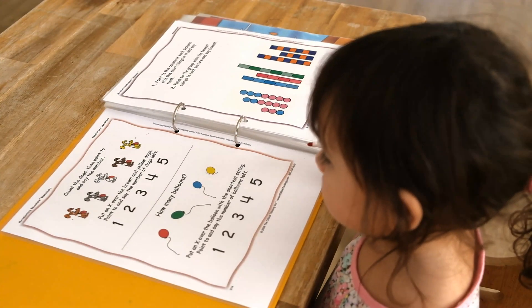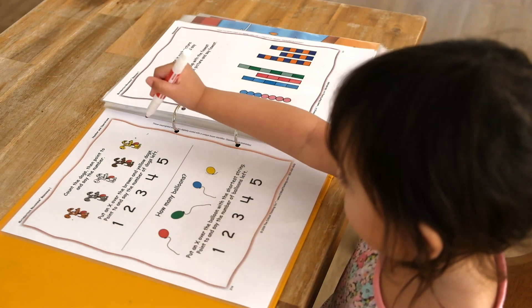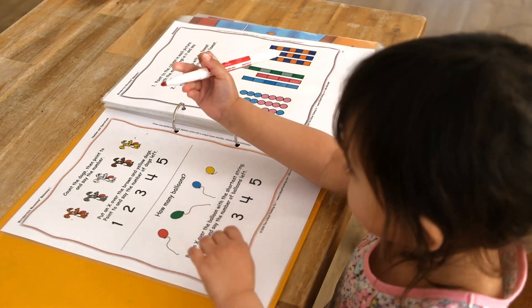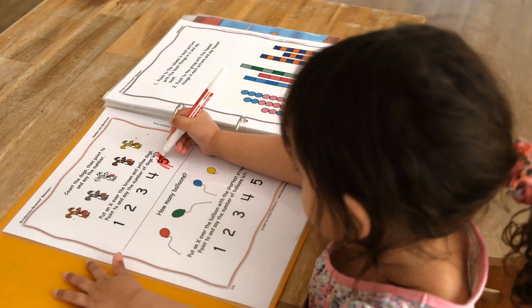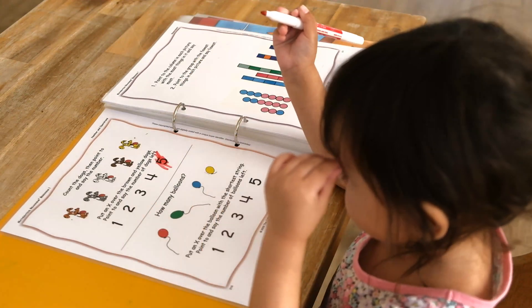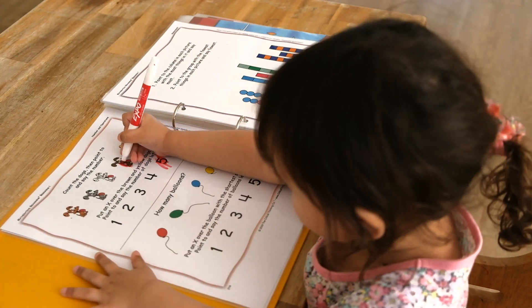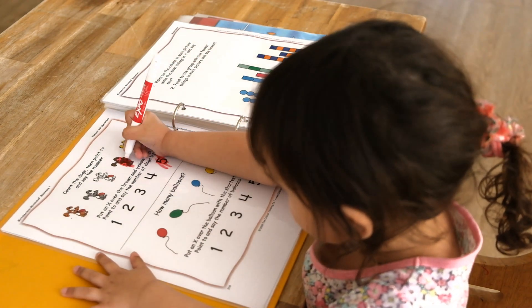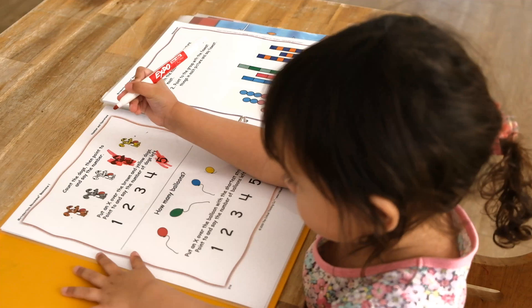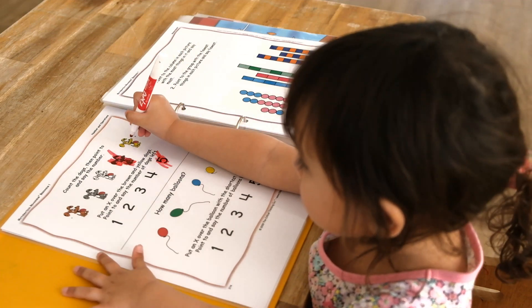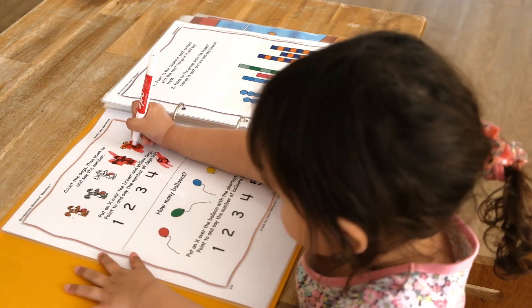Can you count the dogs? One, two, three, four, five. That's right. Can you find number five? Can you circle the brown and yellow dogs? Yellow? Yep. Yellow and brown.